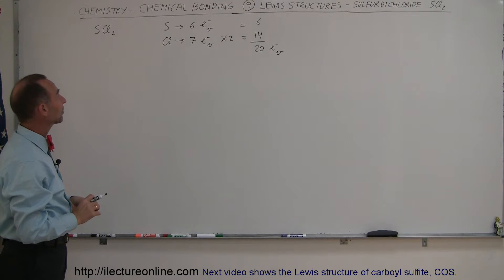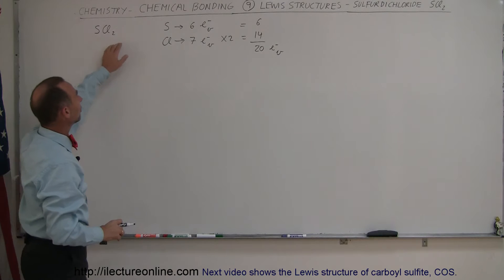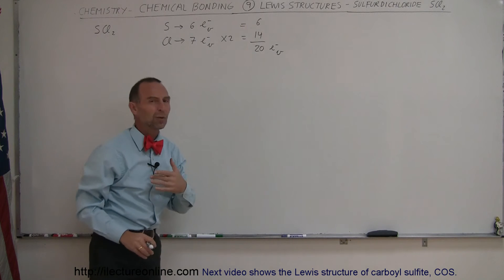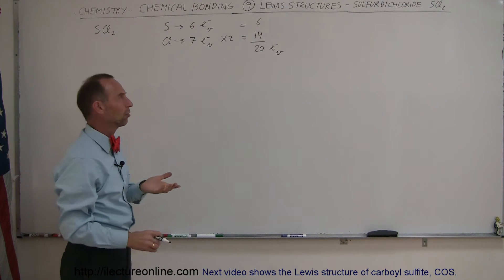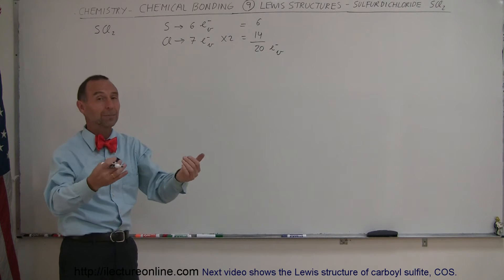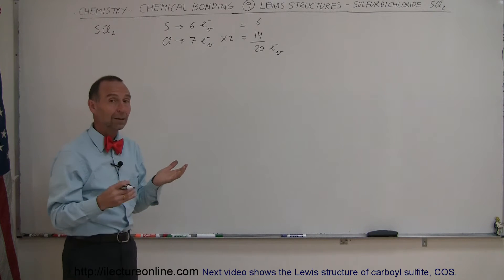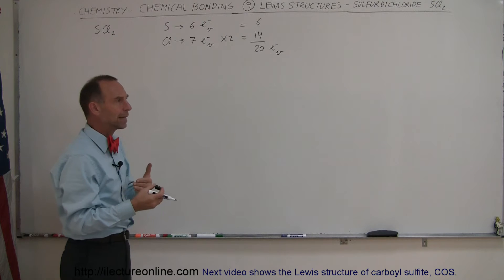Next we can see that sulfur, since it only has 6 valence electrons, wants to have two more electrons. It can accomplish that by grabbing two electrons, or by sharing two electrons, so by making two bonds.